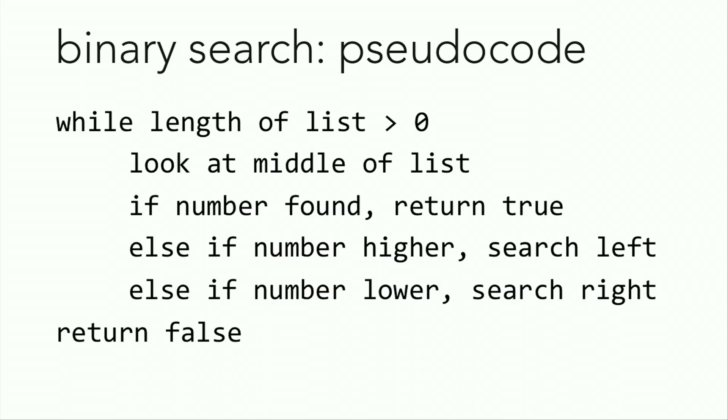So what does the pseudocode look like? While we're still looking through the list and still have elements to look in, we take the middle of the list and compare that middle value to our needle. If they're equal, then we've found the needle and we return true. Otherwise, if the needle is less than the middle value, we discard the right half and search the left side of the array. Otherwise, we search the right side. And at the end, if you don't have any more elements left to search but you haven't found your needle yet, you return false, because the needle definitely isn't in the haystack.